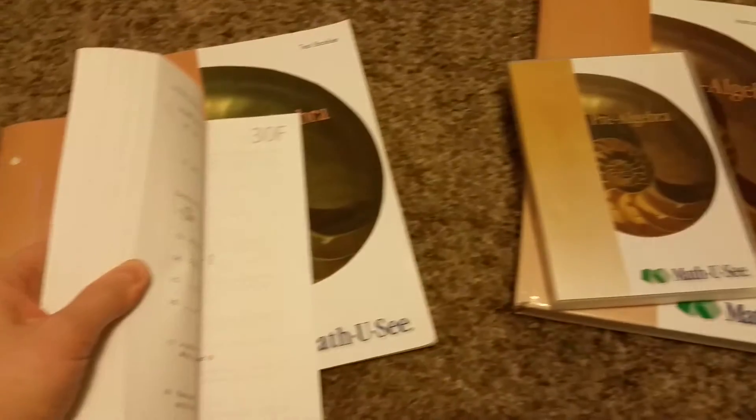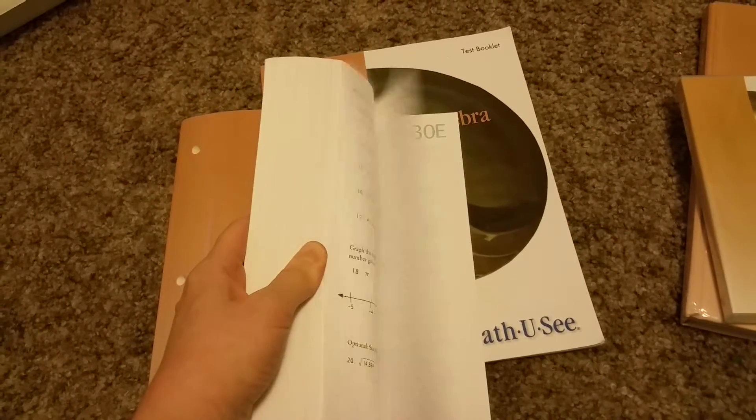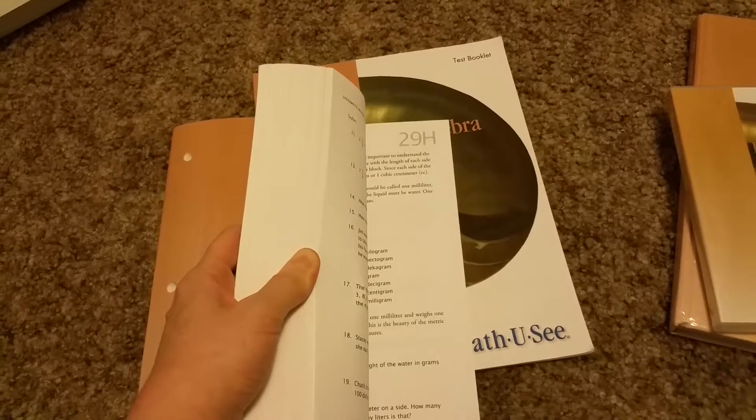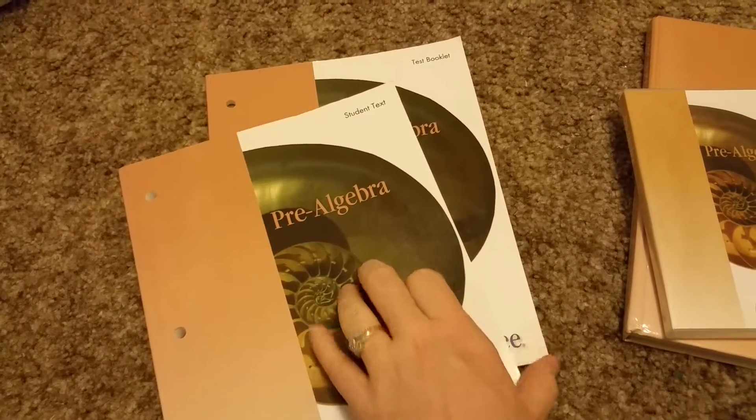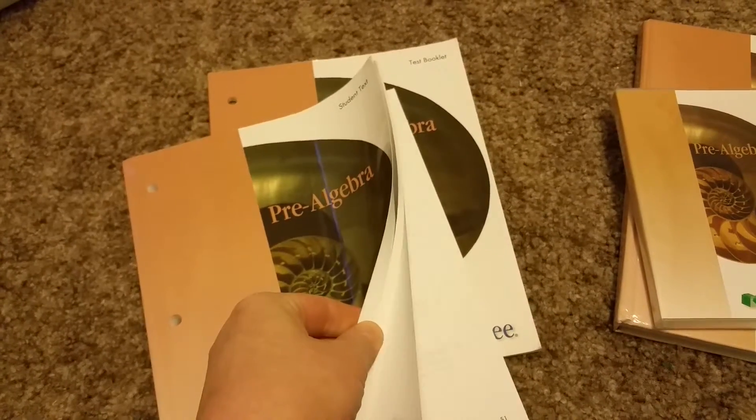There's 30 lessons and you do a lesson a week, so the school year is only 30 weeks. It's nice and relaxed and you can go as fast or slow as you want.